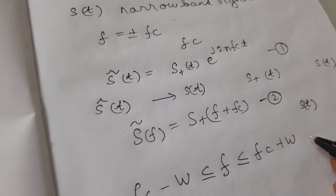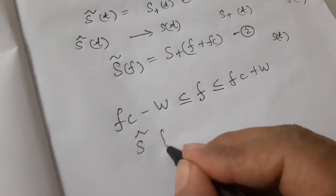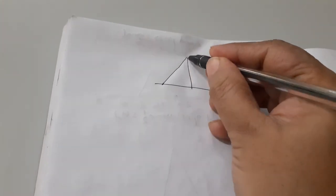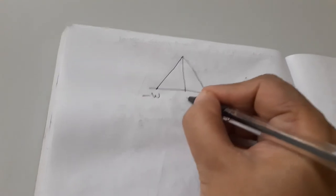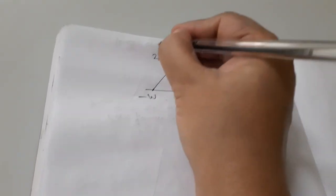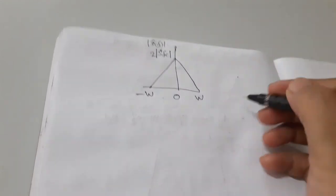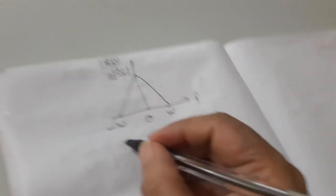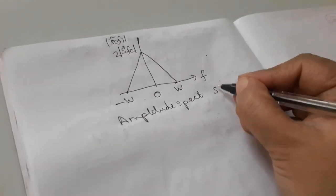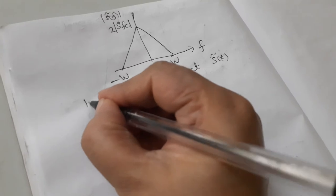Using equation number 2, the spectrum of S tilde F is plotted and appears to be shown in the figure. I will draw the figure. This is the figure for plotting. This is minus w, plus w, 0, 2 of S of fc magnitude, and this is S tilde of f magnitude. This is your f. This is the amplitude spectrum, spectrum of complex envelope S tilde of t. This is figure number 1.3.